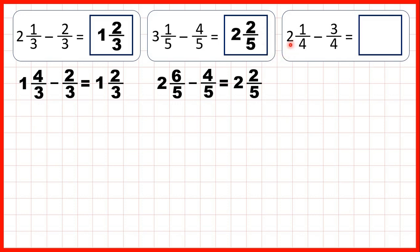Finally, we start with two and one-quarter, but we need to take three-quarters away, so we need to exchange with our whole number. One less than two is one, and that means we can add the denominator to the numerator, so one and five-quarters is the same as two and one-quarter.